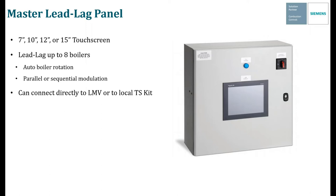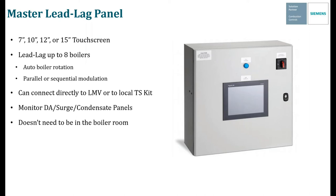You can connect the master panel directly to an LMV or to a local touchscreen kit — you don't have to have a touch screen at each boiler to use the master panel. You could have just LMV3s or LMV5s at the boiler and connect those to the master panel. You can also use the master panel to monitor the DA, surge, or condensate panel. The master panel doesn't need to be in the boiler room — it can be in a separate control room, elsewhere in the building, or you can even have more than one where two master panels control the same system and mirror each other.